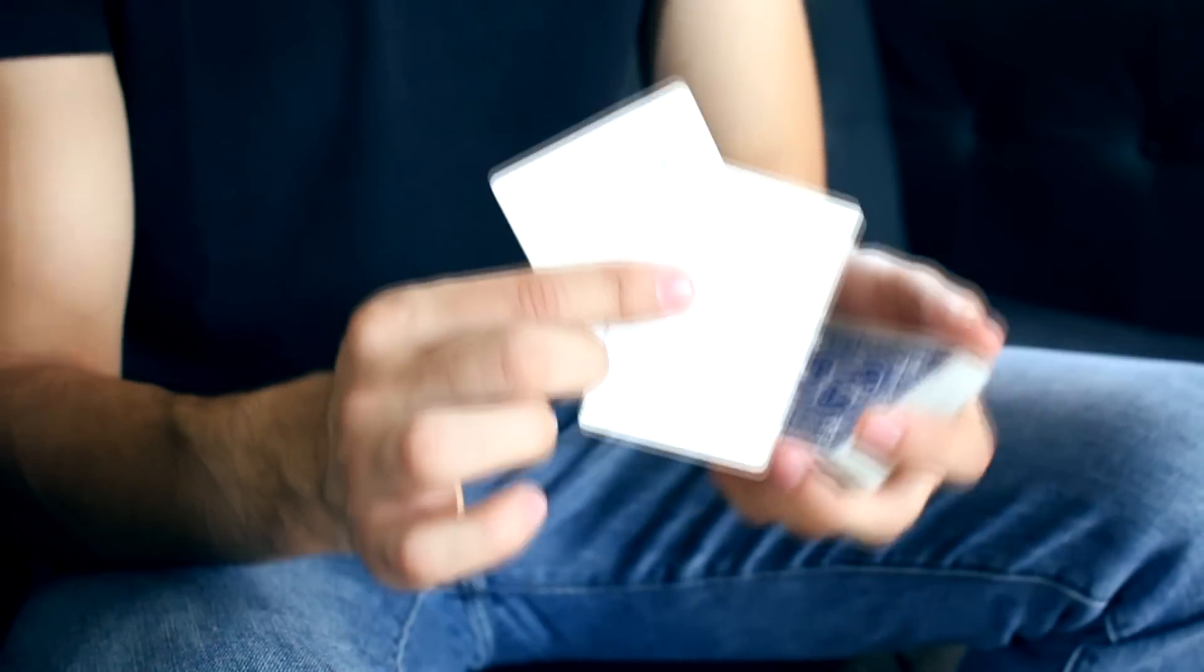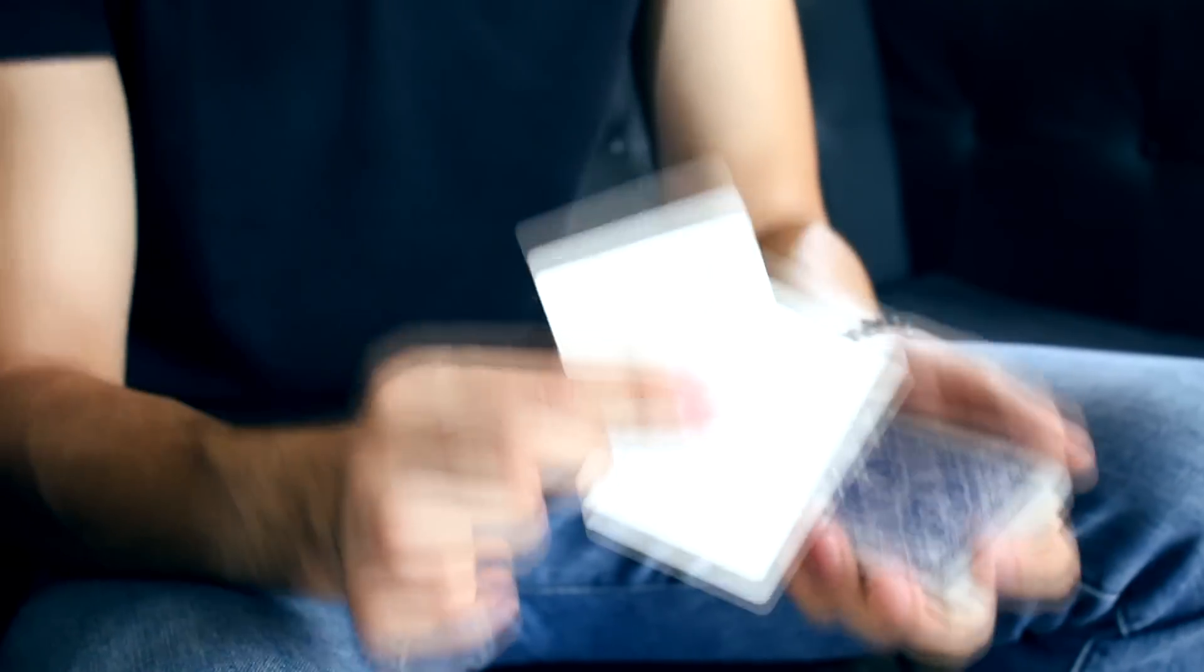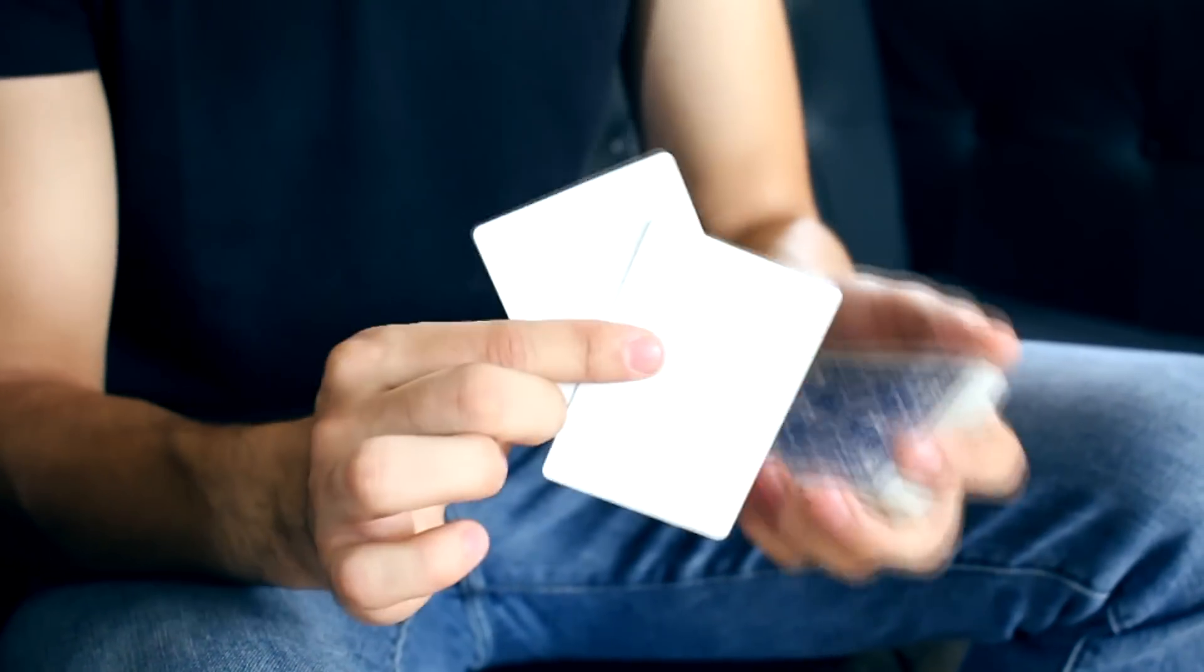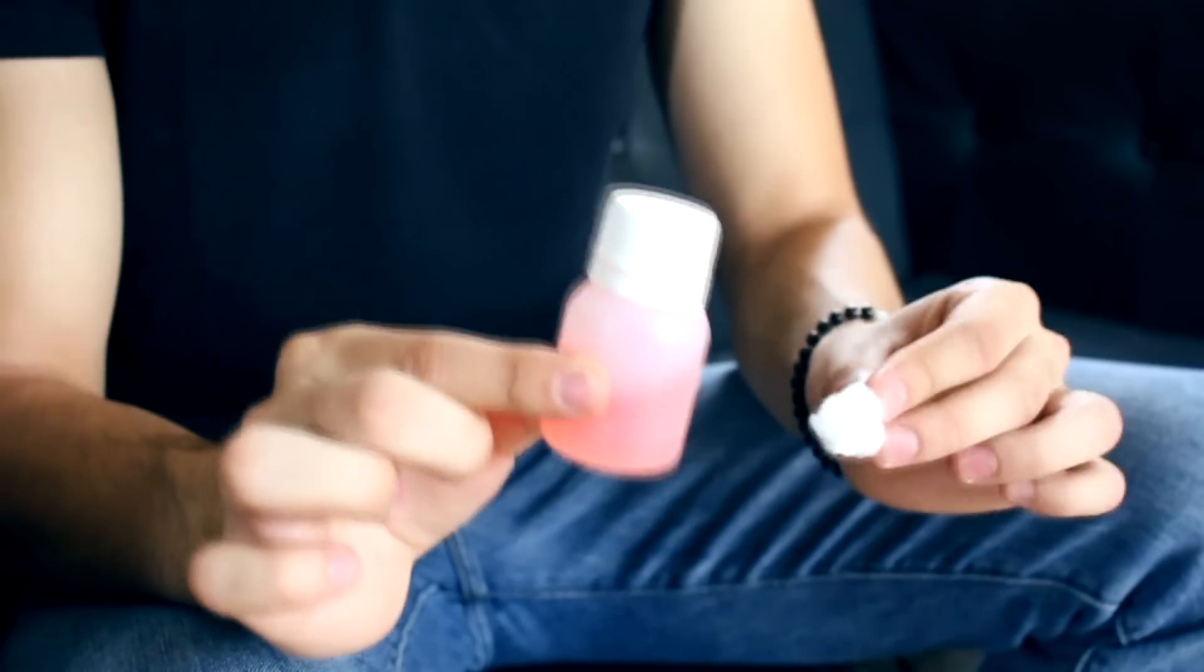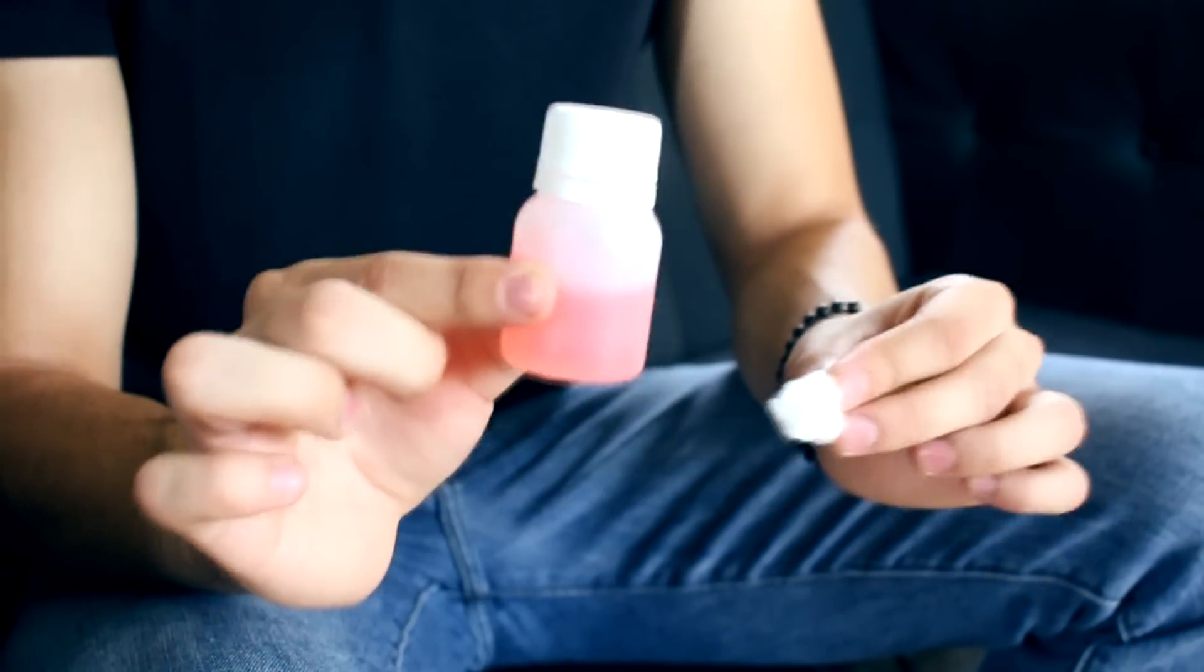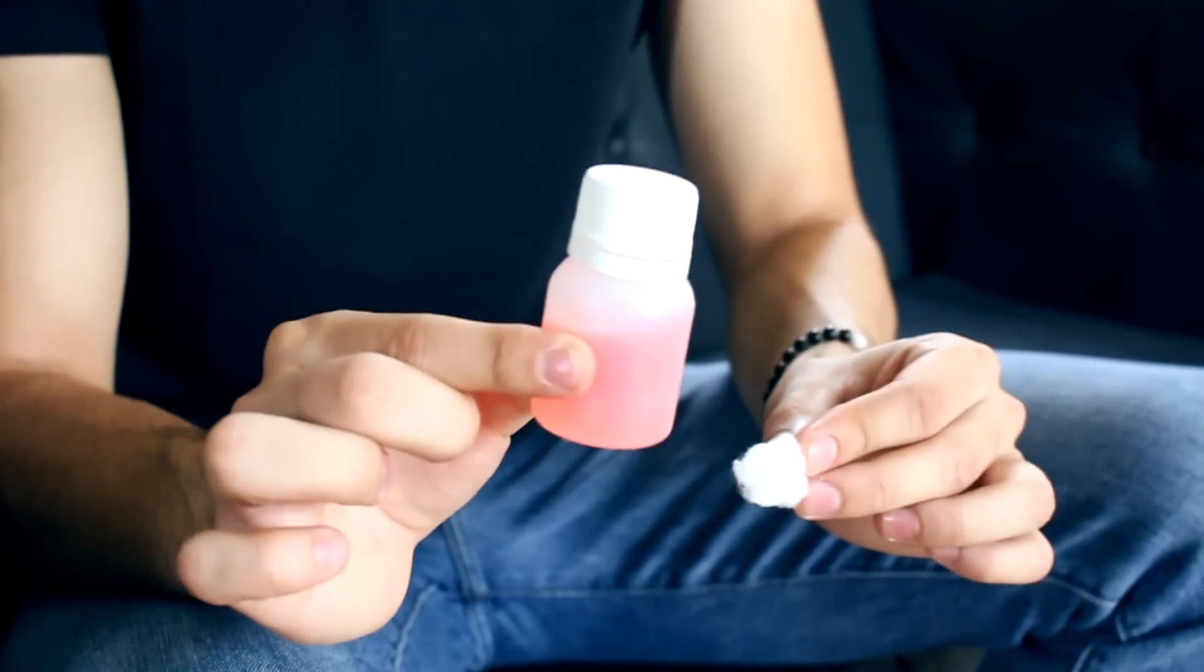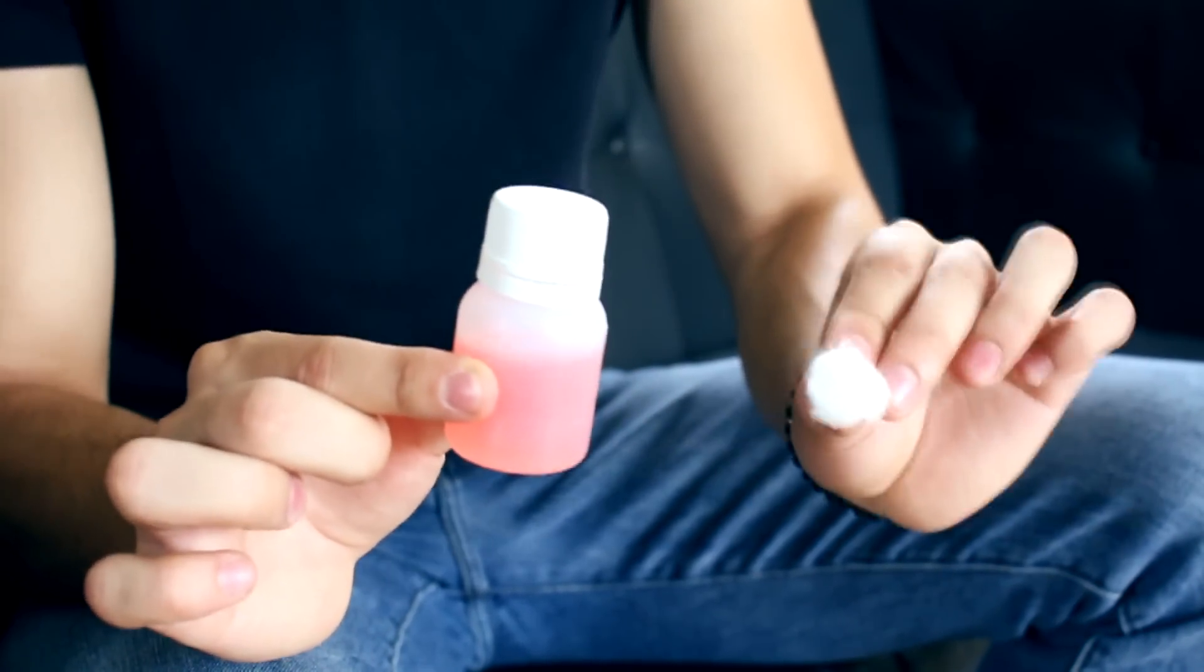You don't necessarily have to spend a lot of money buying a deck specifically with white faces, but you can make them yourself. Very simple. You will only need a little bit of acetone or a little bit of silver, and a piece of cotton.